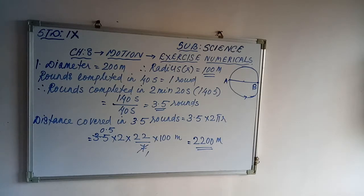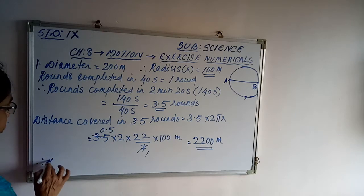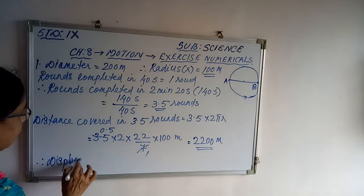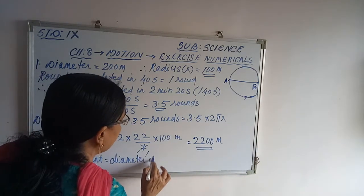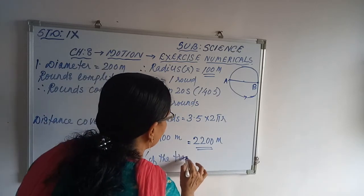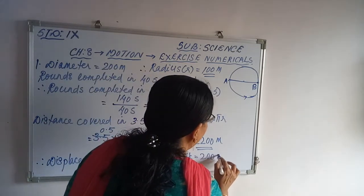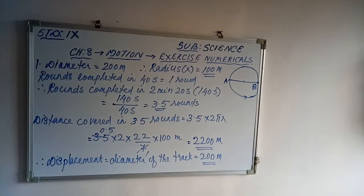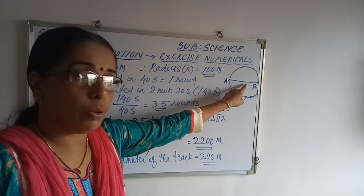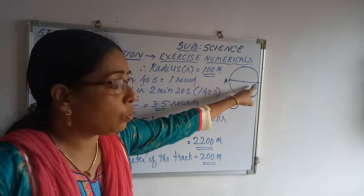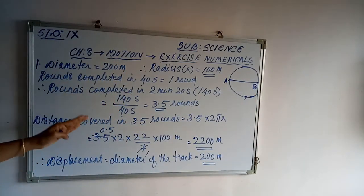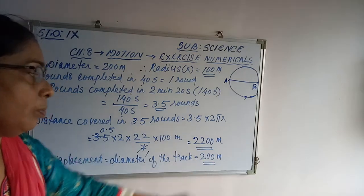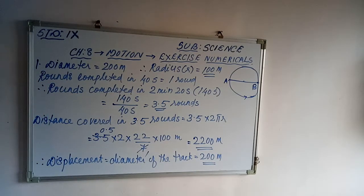So we can write: displacement is equal to the diameter of the track, that is 200 meters. The reason is that after 3.5 rounds, the person will be diametrically opposite on the circular track. Therefore, the final answers are: distance covered = 2200 meters and displacement = 200 meters.